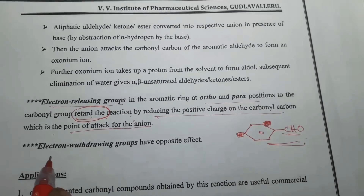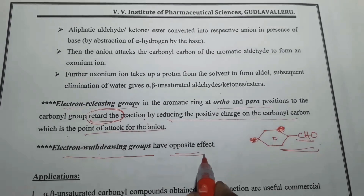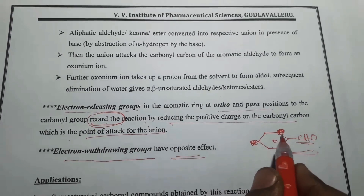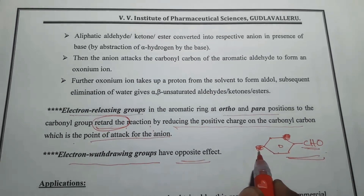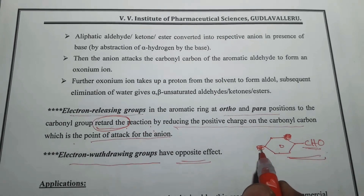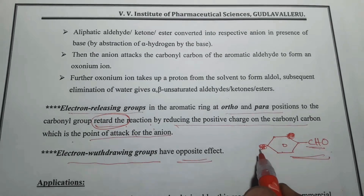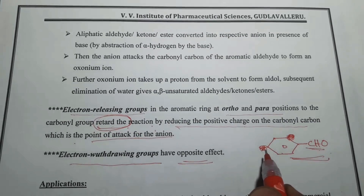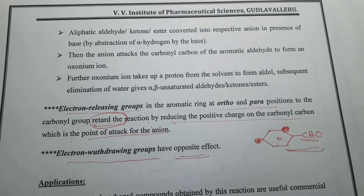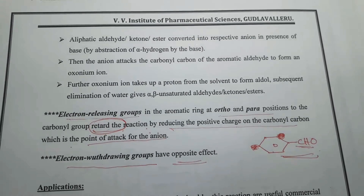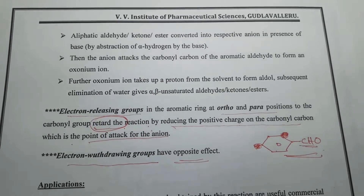On the opposite side, electron-withdrawing groups have the opposite effect. For example, at the ortho and para positions, if there are electron-withdrawing groups like halogens, carboxylic acids, or nitro groups, they accelerate the reaction. That covers the effect of electron-releasing and electron-withdrawing groups at ortho and para positions of the aromatic aldehyde.